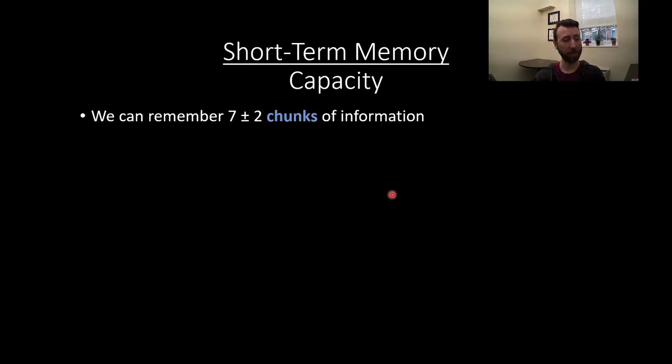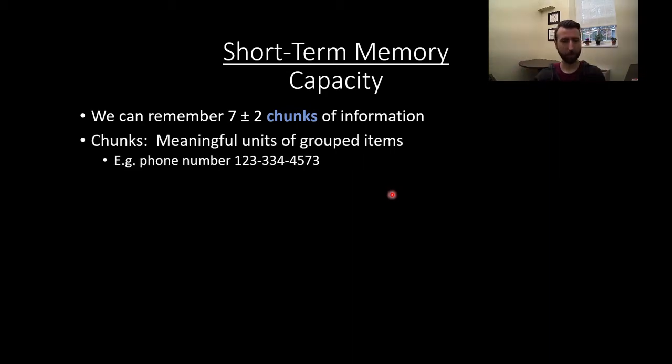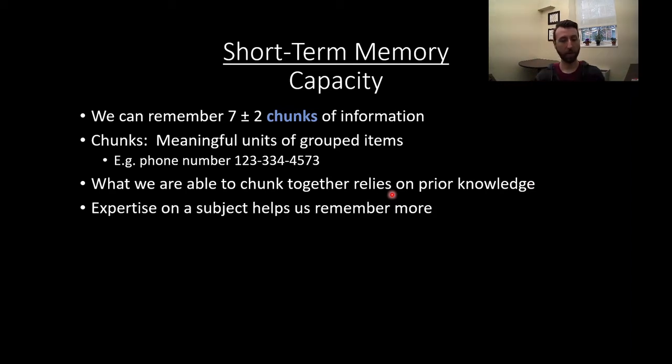We can remember seven plus or minus two chunks of information. Not necessarily items like letters or numbers, but meaningful pieces of information. So chunks are meaningful units of grouped items. This is one of the reasons why phone numbers are presented in small chunks. It's easier to remember. However, what we're able to chunk together relies on prior knowledge. For example, if you didn't know what the FBI was, the three-letter sequence FBI is not meaningful to you and therefore there's not an easily remembered chunk of information. So expertise on a subject can help us remember more about that subject, as we'll see here in a second with experts versus novices in chess playing.